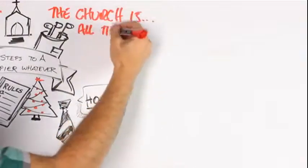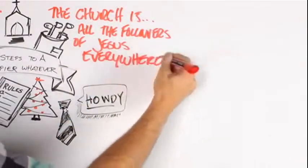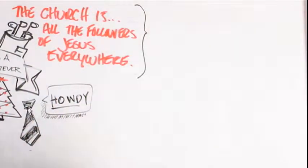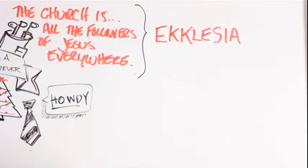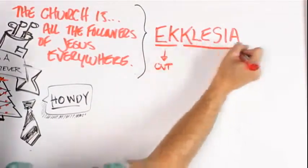The church is all the followers of Jesus everywhere. The Greek word for church is the word ekklesia. It's the combination of two words: ek, which means out, and kaleo, meaning called.